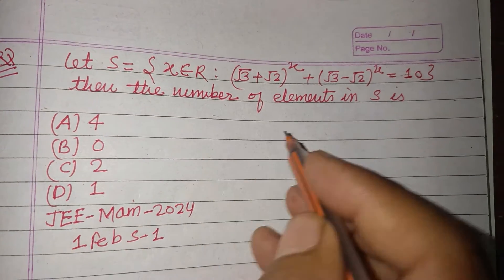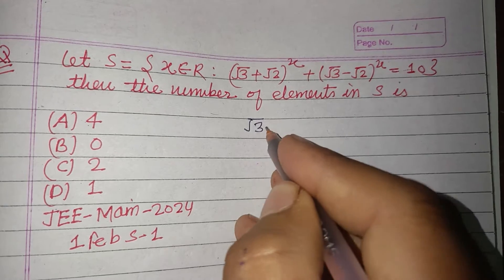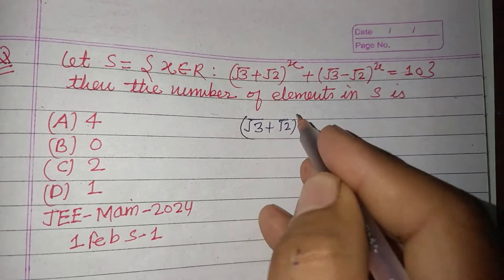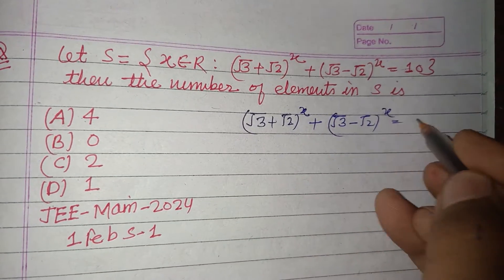We can easily get the number of elements in set S. Here it is given: (√3 + √2)^x + (√3 - √2)^x = 10.